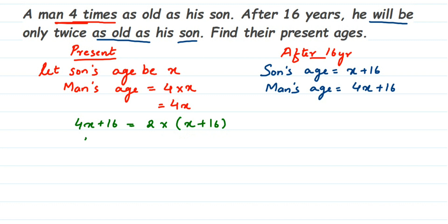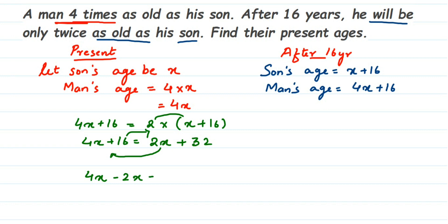So the equation is: 4x + 16 = 2(x + 16). Opening the bracket: 2 into x is 2x, and 2 into 16 is 32. So 4x + 16 = 2x + 32. Now we bring all variables to one side and constants to the other: 4x − 2x = 32 − 16.